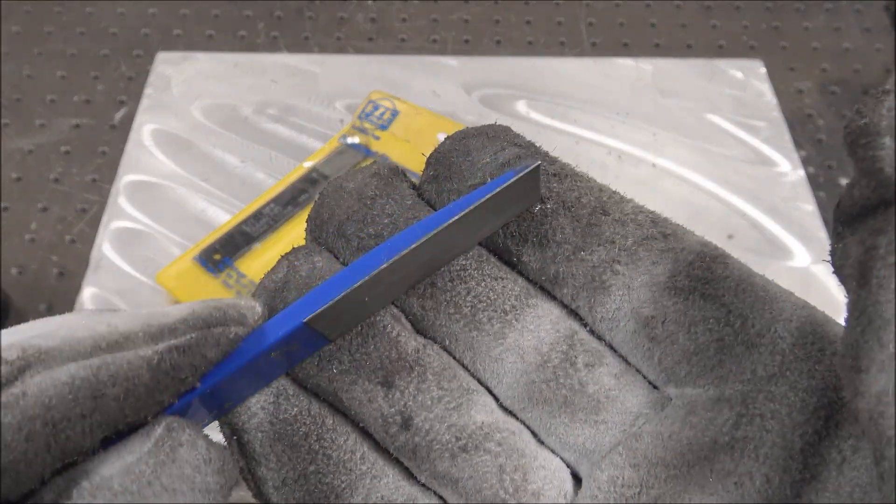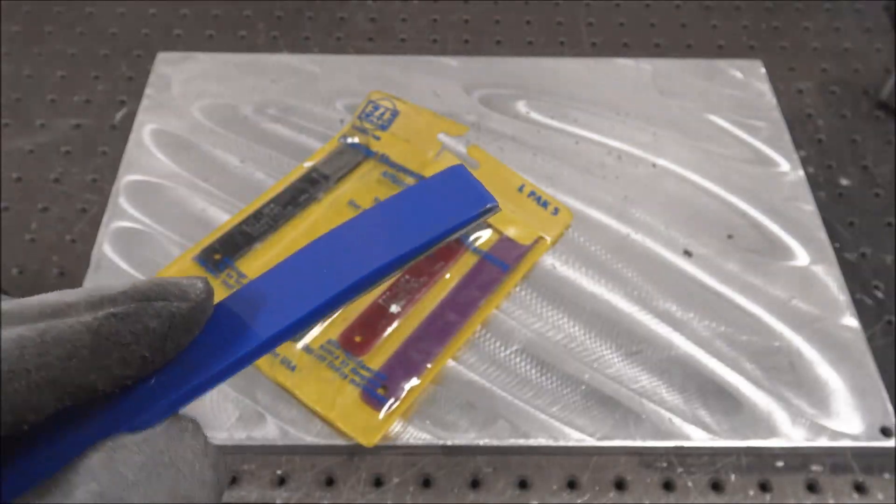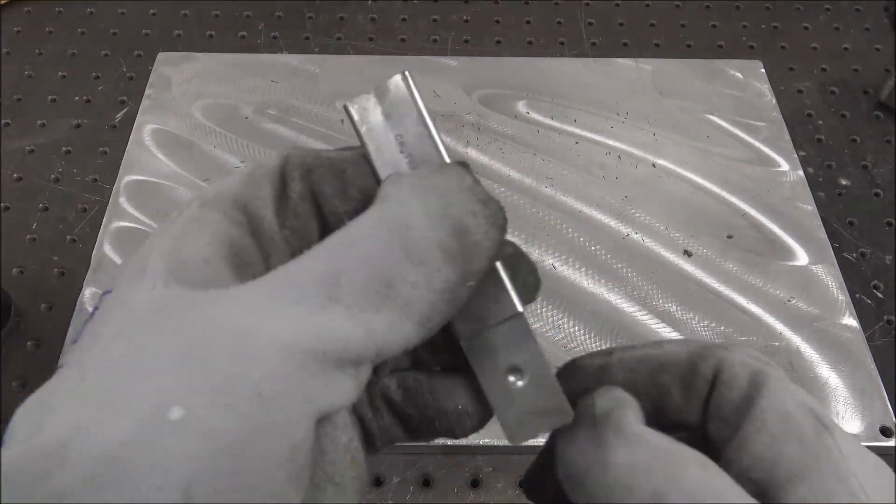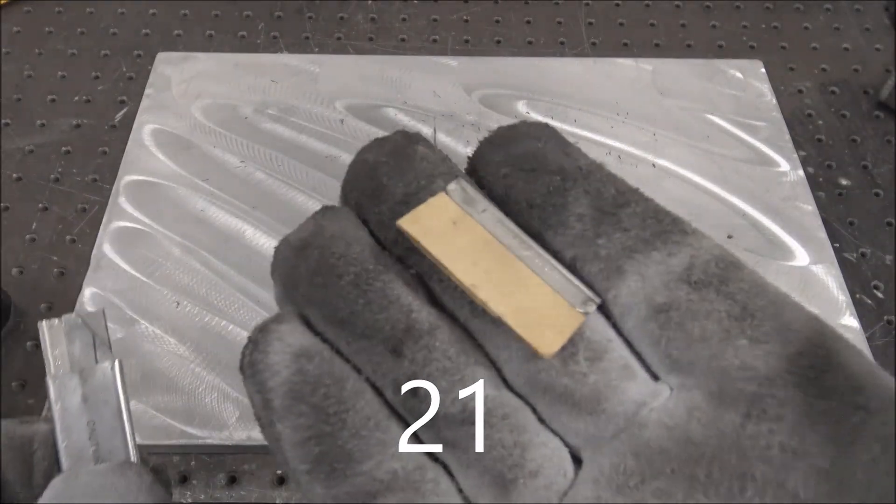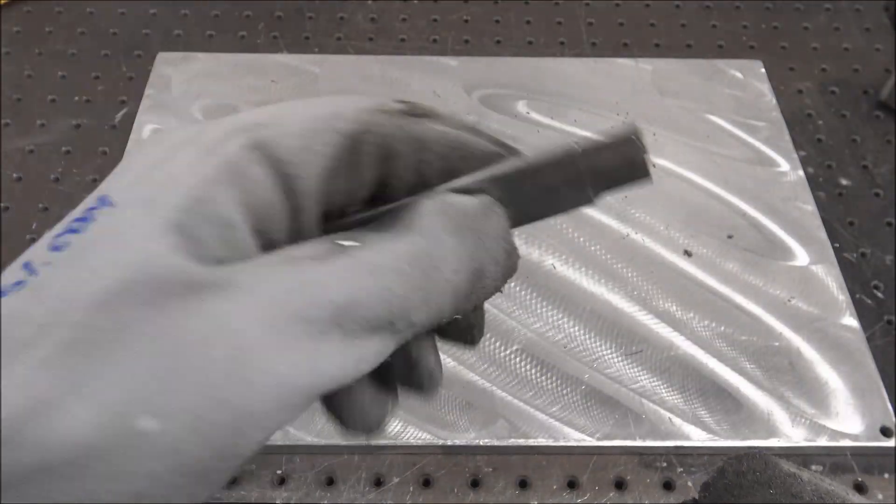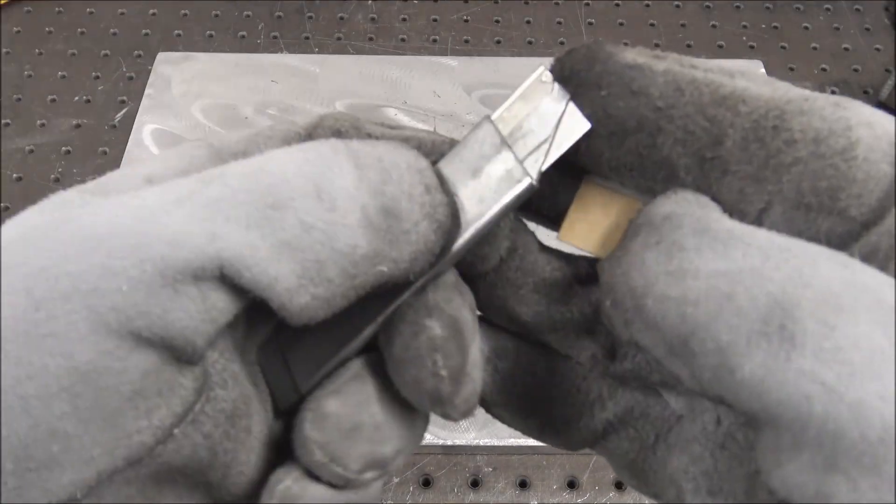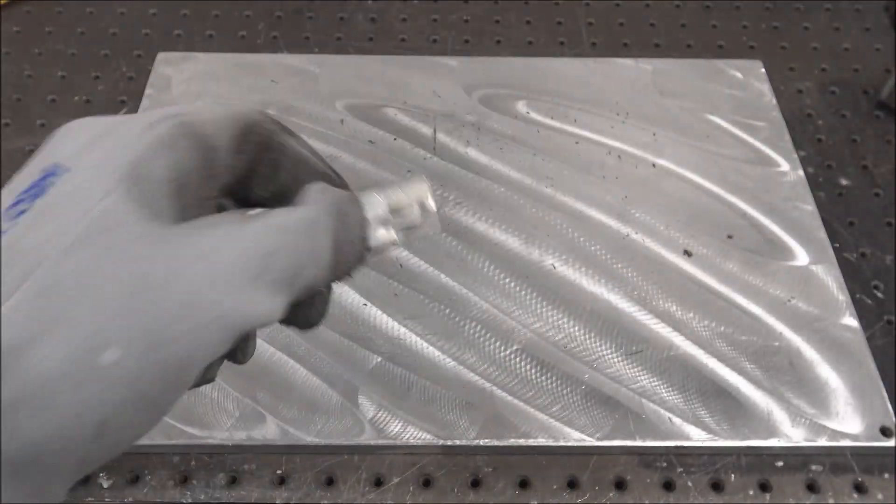Little box cutter that takes normal razor blades to open all your cardboard boxes. This works better than anything else because of how thin they are—they cut cardboard really fast.